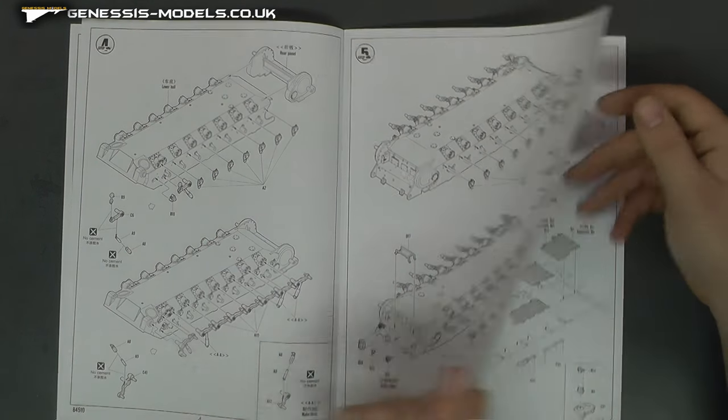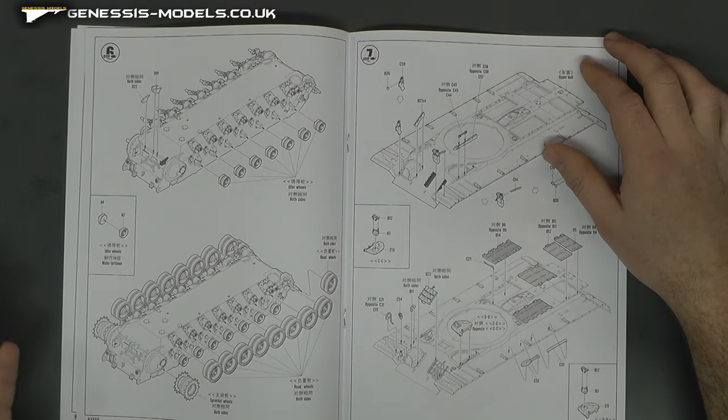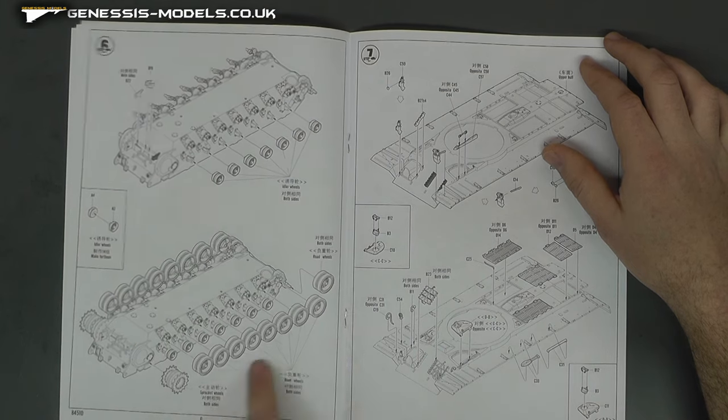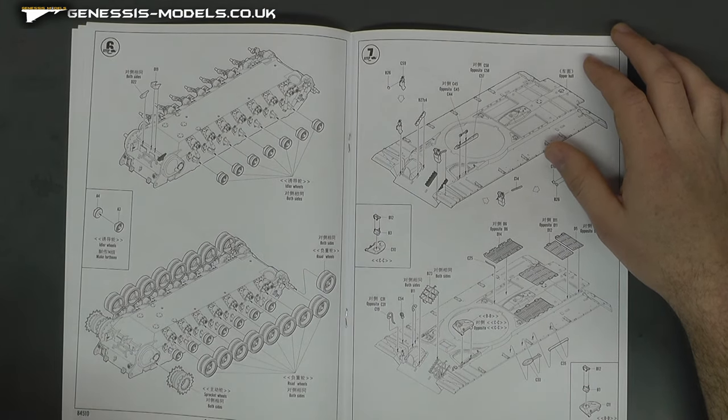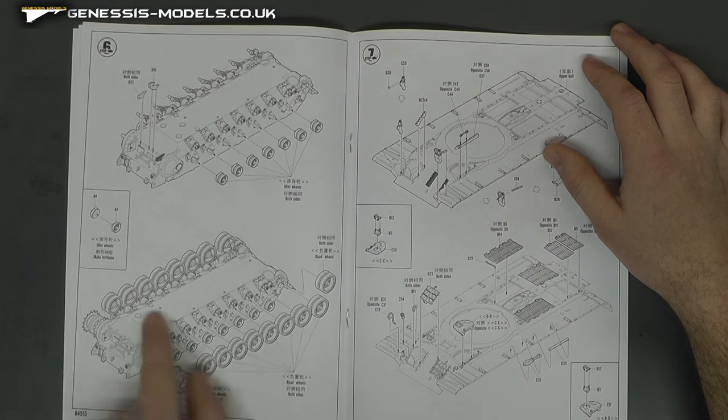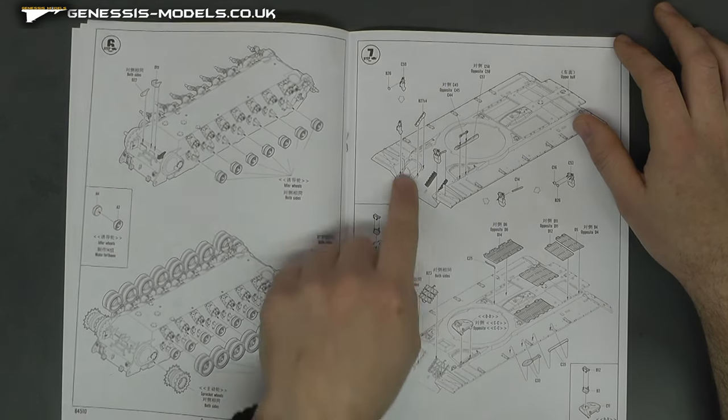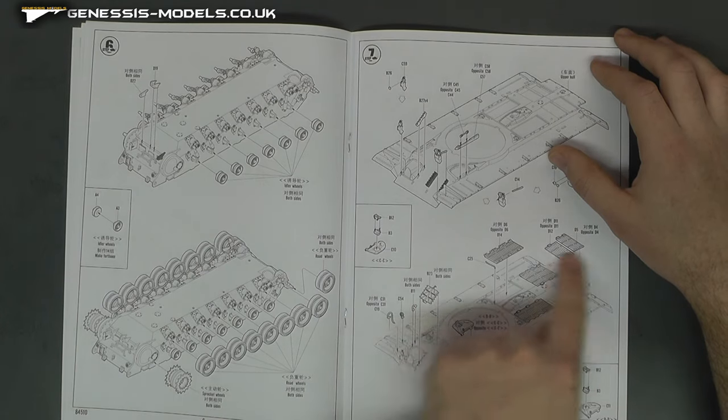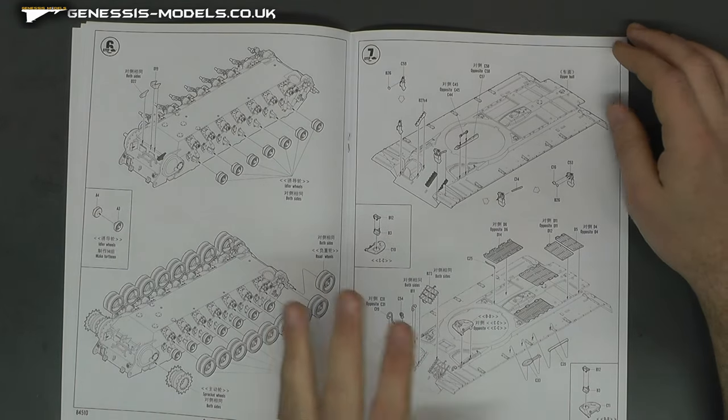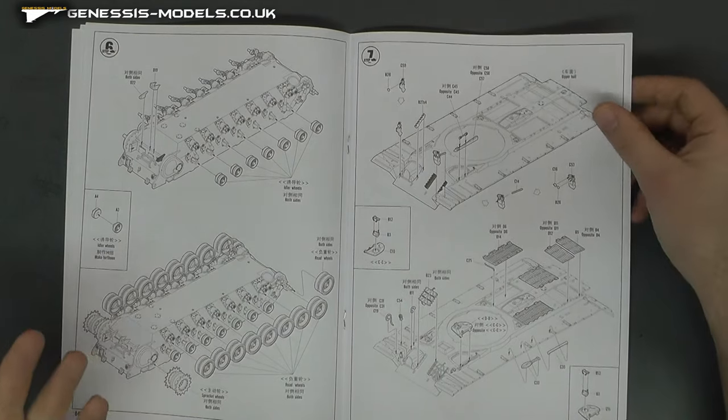You know, we do have all these road wheels, typical armoured vehicle, going to take you forever. But that seems to be straightforward. It gets you to put all these bits and bobs on the hull, the top hull section. Again, it doesn't look too tricky to follow the instructions.